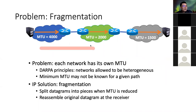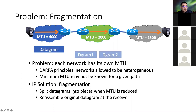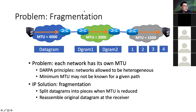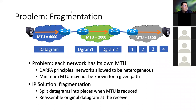Here's an example: a datagram of 4,000 bytes needs to pass through a 2,000 MTU link, so split into two 2,000-byte packets. Each 2,000-byte packet then needs to split into 1,500 and 500 to pass a 1,500 MTU link. Finally the receiver puts them back into the original datagram. That's the idea of fragmentation.